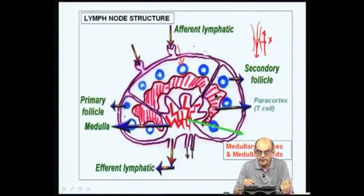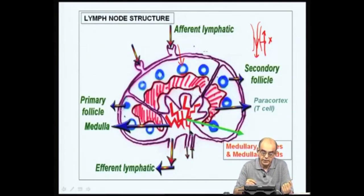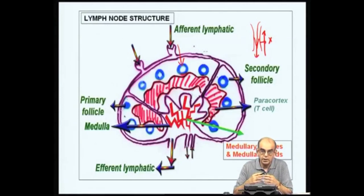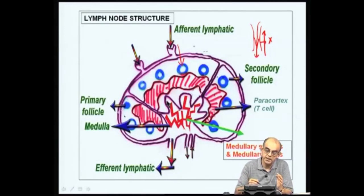From the paracortex, the antigens and some of the activated cells — especially the B cells that have been activated and differentiated into plasma cells — accumulate in the medullary region. The medulla is organized into medullary cords and medullary sinuses, along which all these plasma cells and T helper cells migrate and start to accumulate.